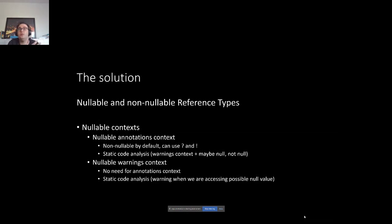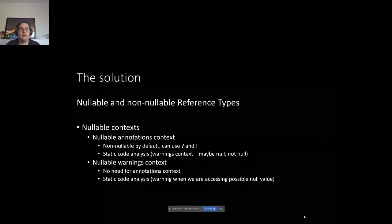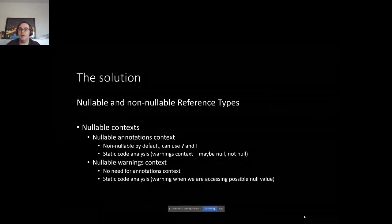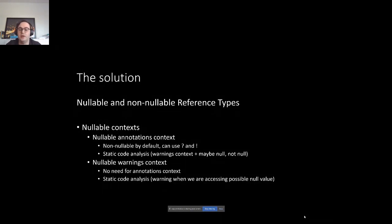The nullable warnings context is something you can already enable today in your existing projects, because it won't change the behavior of your code — it will just generate extra warnings when you're possibly accessing a possible null value. If you browse through these warnings, I guarantee you'll come across situations where you think: 'Oh my God, this is broken code. I need to fix this.' I think this already adds extra value in the short term.